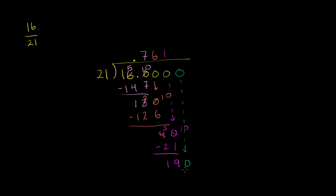And 21 goes into 190. Let's see, I think 9 will work. Let's try 9. 9 times 1 is 9, 9 times 2 is 18. When you subtract, 190 minus 189 is 1.